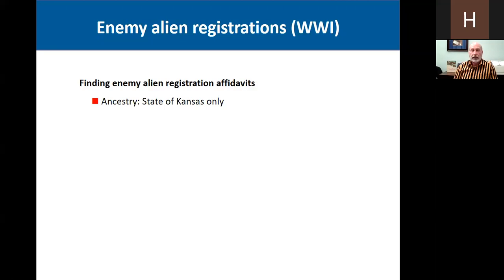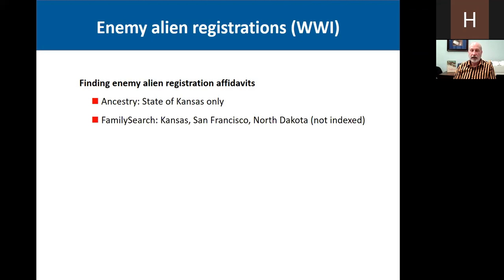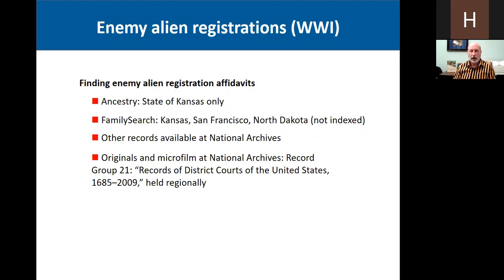Unfortunately, after World War One, many states felt these registrations were no longer needed and destroyed them. The ones for Kansas are available on Ancestry. FamilySearch has the ones for Kansas, San Francisco, and North Dakota — these are not indexed; you can just browse the images. Other than these, I think these are all the ones that are still extant. There may be other records available at the National Archives — these enemy affidavits show up in Record Group 21, Records of District Courts of the United States, 1685 to 2009, held at regional National Archives facilities.